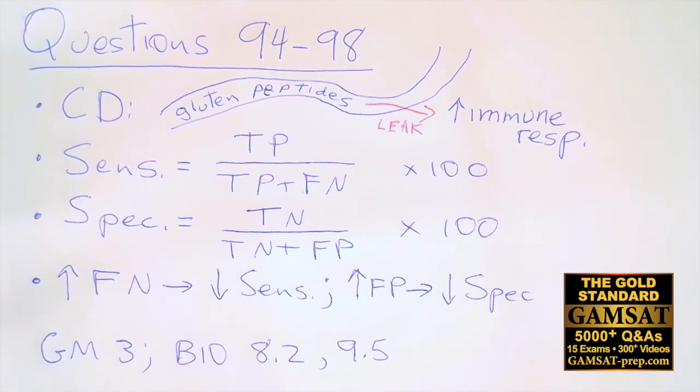Therefore, 97 the answer is D. And if you had any doubt about the specificity, notice that DQ8 has a higher specificity at 80% as compared to DQ2 at 70%. Higher specificity would mean a decrease in false positives, but the question was asking about a greater proportion, not a reduction. And that's why 97 is D.